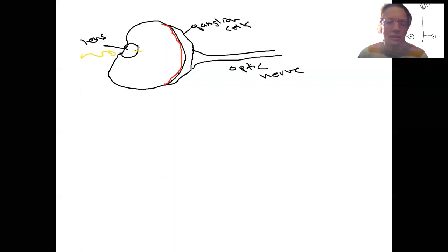So light is going to come in, be focused to the back of the eye. And then that neural information is going to pass from the photoreceptors in the retina back to the ganglion cells, back to the optic nerve.